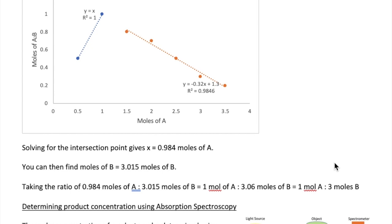So that's the method of continuous variations, which we will use in this case to help us figure out the stoichiometric ratio of our reaction today.